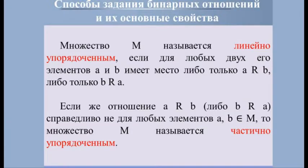Пример: пусть M = {1, 3, 4, 7}, R обозначает «меньше». Тогда R = {(1,3), (1,4), (1,7), (3,4), (3,7), (4,7)}. Для каждой пары элементов справедливо A < B, следовательно, отношение «меньше» на множестве M является отношением линейного порядка.